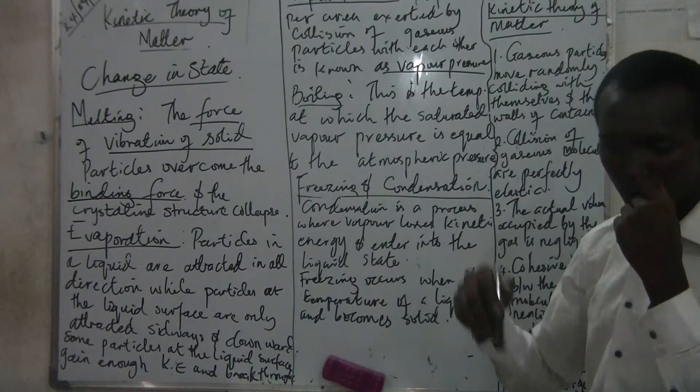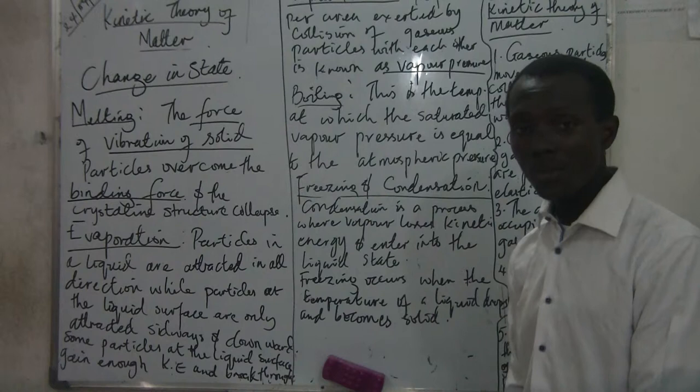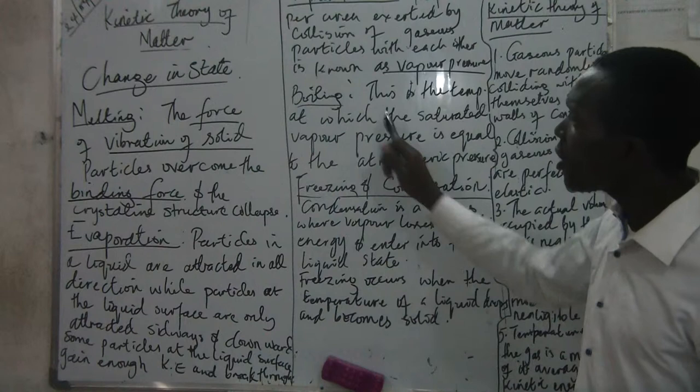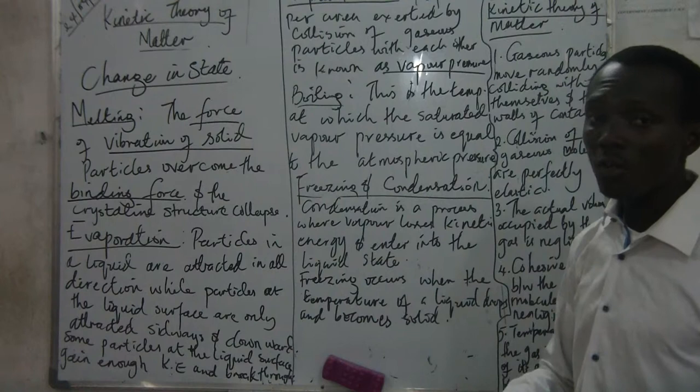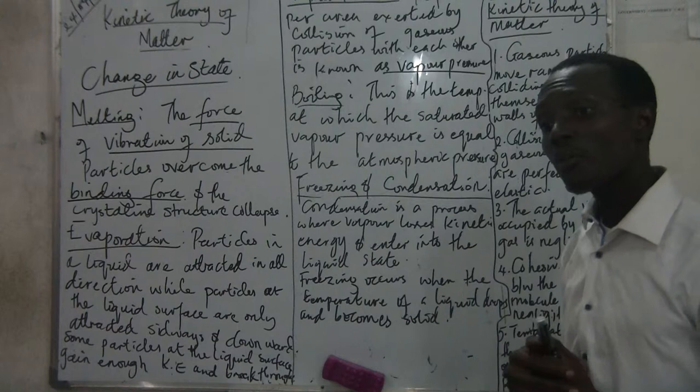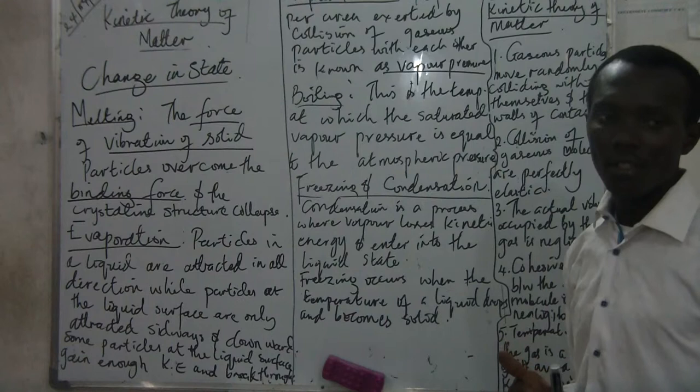When the saturated vapor pressure is equal to the atmospheric pressure, the particles of that liquid change to gas. But before this occurs — between the saturated vapor pressure, at 100 degrees Celsius, and steam — there is what is known as latent heat of vaporization.